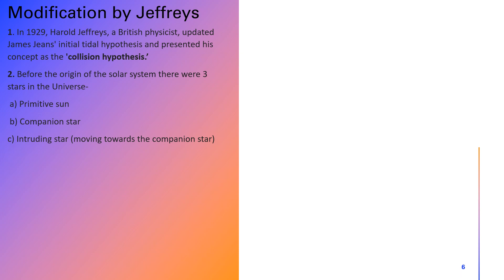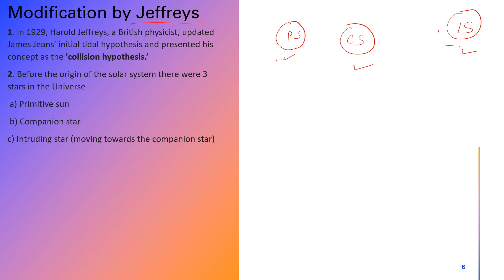Now let's look at Jeffries' modification. According to Jeffries, there were three stars in the universe: our primitive sun, a companion star, and an intruding star. In Jeans' hypothesis there were only two stars, but Jeffries added a third. The intruding star attacked and shattered the companion star into fragments.